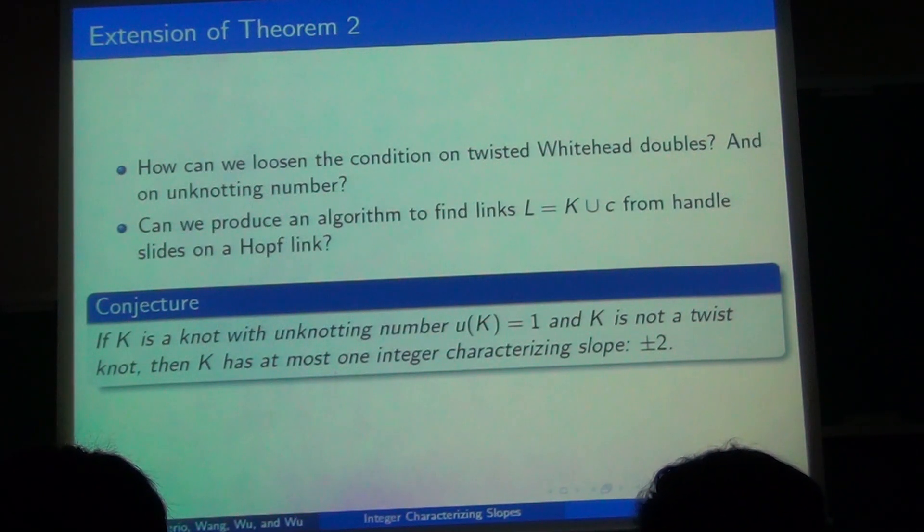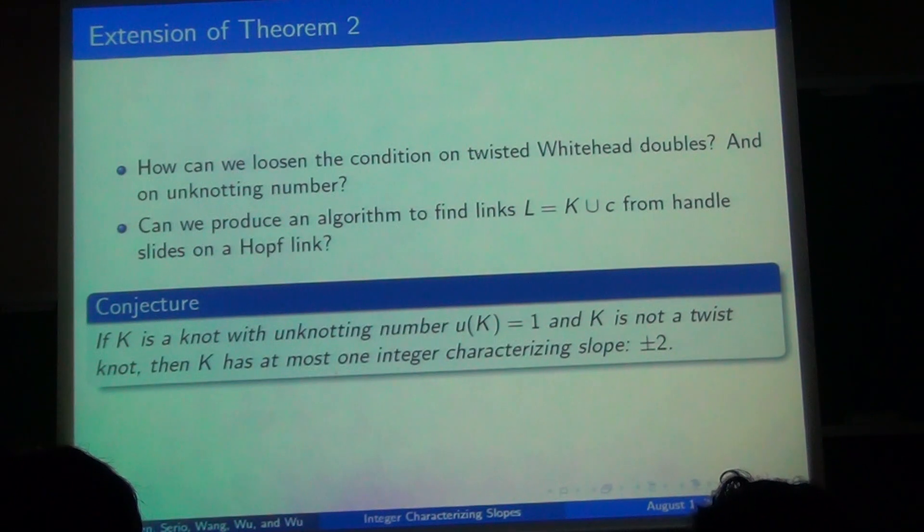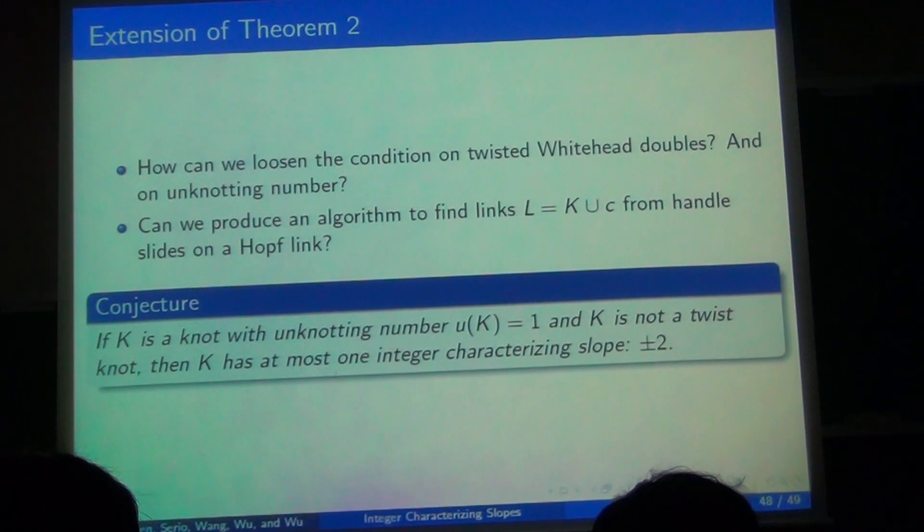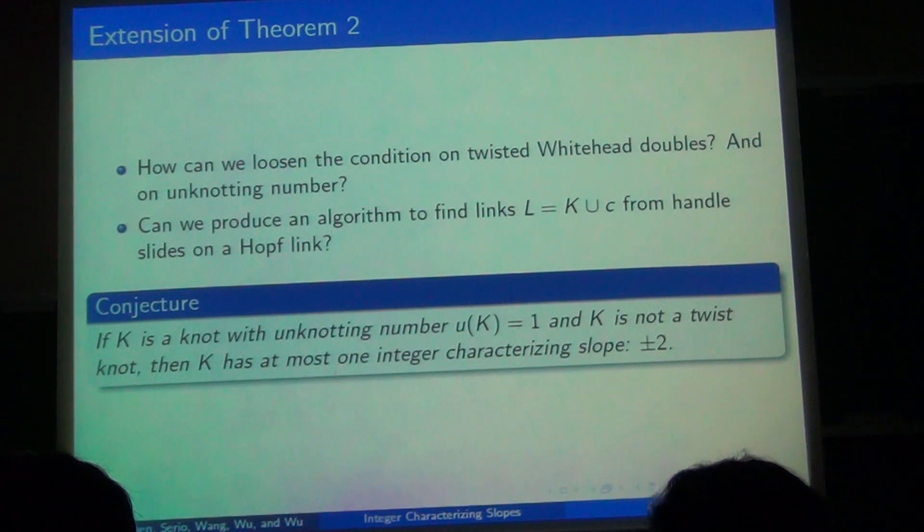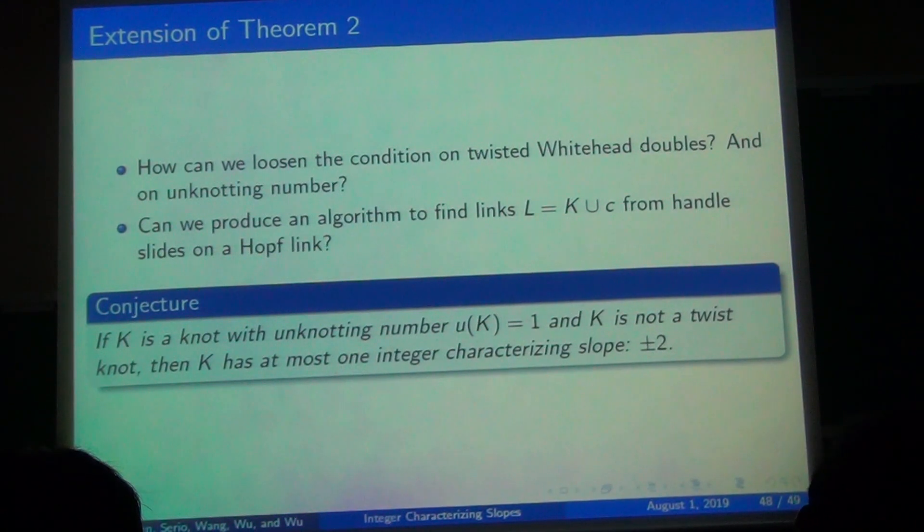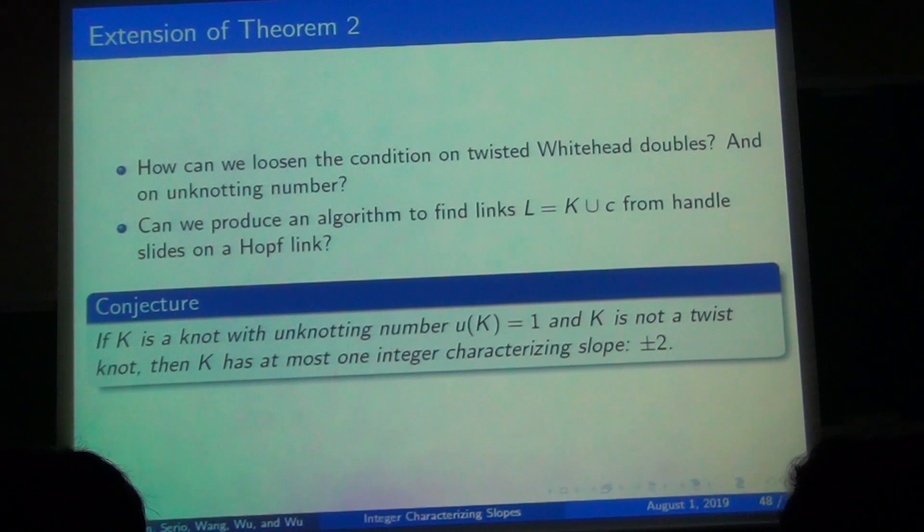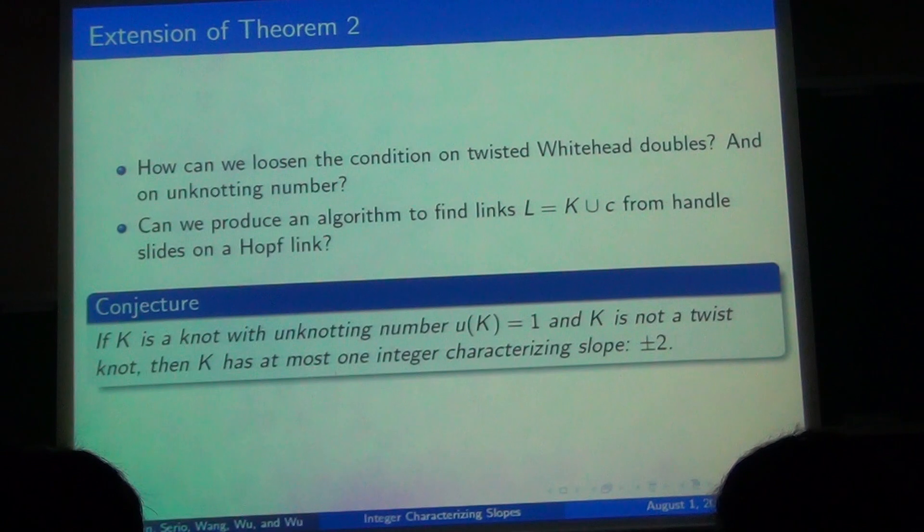So we're already looking at how we can extend theorem two because it began like a conjecture after results from theorem one. Since in theorem one we found that twist knot 8₁ fits, we believe that the assumption of twist knots for theorem two can be dropped if we loosen some condition. Same goes for unknotting number because we found some knots with unknotting number two that also fit theorem one. We believe that we can answer this question if we can produce an algorithm to find the links L equals K union C that fit Piccirillo's construction. So it's just after handle sliding a hoplink repeatedly, you can find a knot K and a knot C that's linked to it. We also conjecture that theorem two is going to become something like: if K has unknotting number one and K is not a twist knot, then K has at most one integer characterizing slope, zero or minus two, because that's actually what we found in theorem one. We just were not able to prove it with the tools that we have.